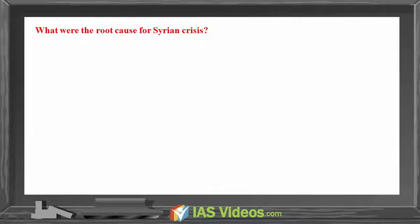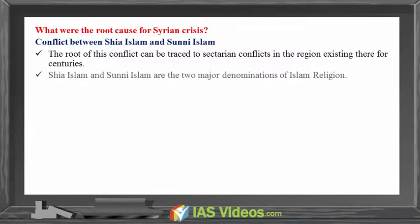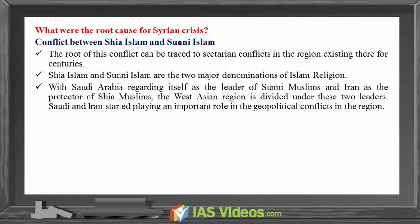What were the root causes for the Syrian crisis? The conflict between Shia Islam and Sunni Islam is a key root cause. The root of this conflict can be traced to sectarian conflicts in the region existing for centuries. Shia Islam and Sunni Islam are the two major denominations of Islam. With Saudi Arabia regarding itself as the leader of Sunni Muslims and Iran as the protector of Shia Muslims, the West Asian region is divided under these two leaders, and both started playing an important role in its geopolitical conflicts.